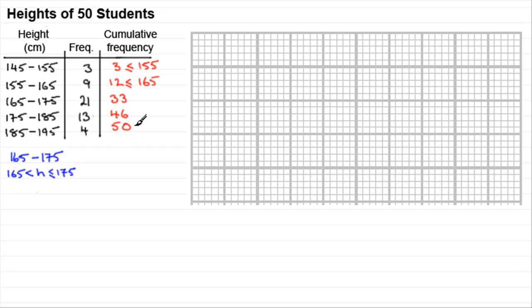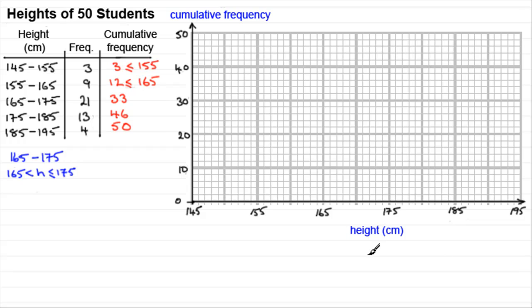Now we need to set up a graph to plot these values. So what we do is we set up some axes and we have the height here. Make sure you label it, otherwise you're likely to lose marks. We've got the height in centimeters going from 145, that's our lowest value, right the way up to our greatest value of 195 centimeters. And then we have this axis, the vertical axis, which is always cumulative frequency. And in this example, the cumulative frequency, well it will always go from zero and it goes up to our maximum value of 50.